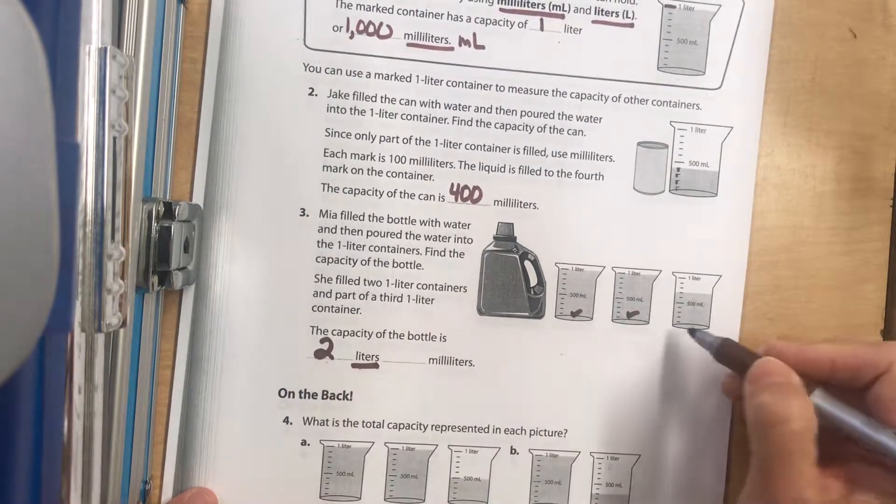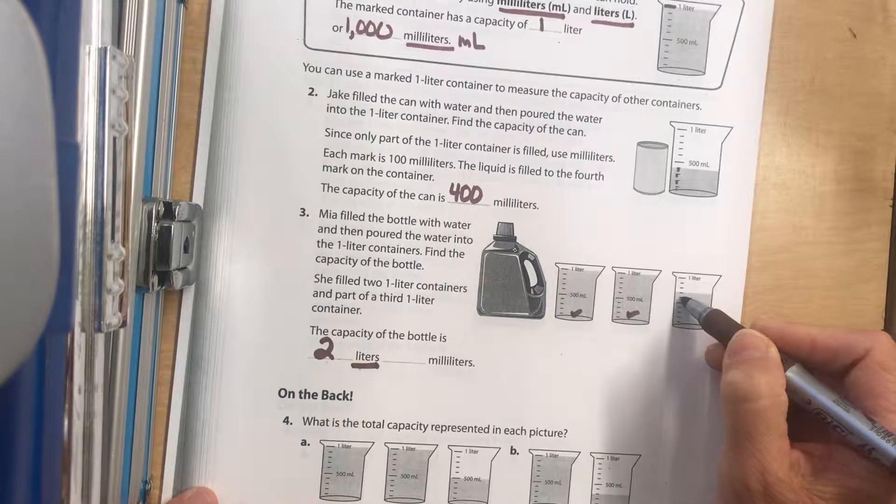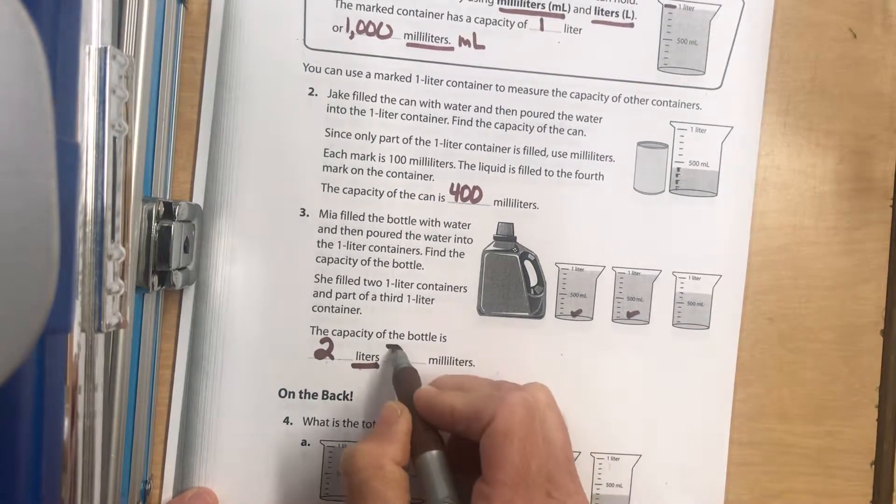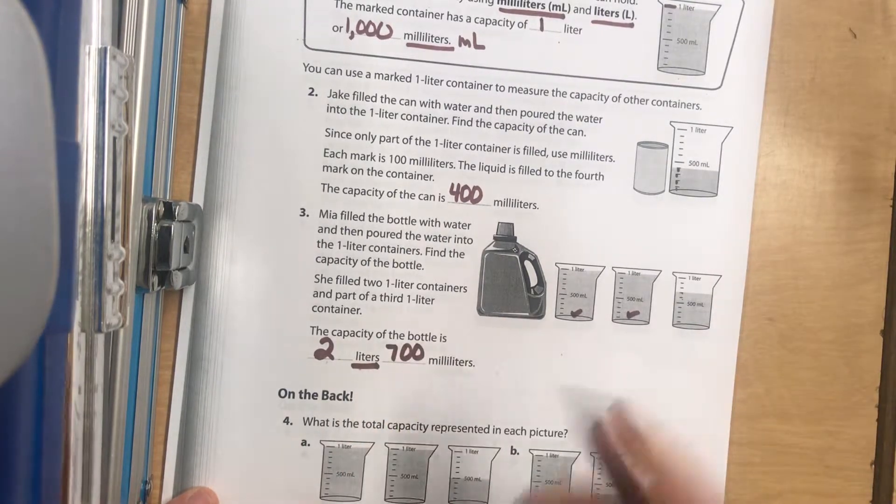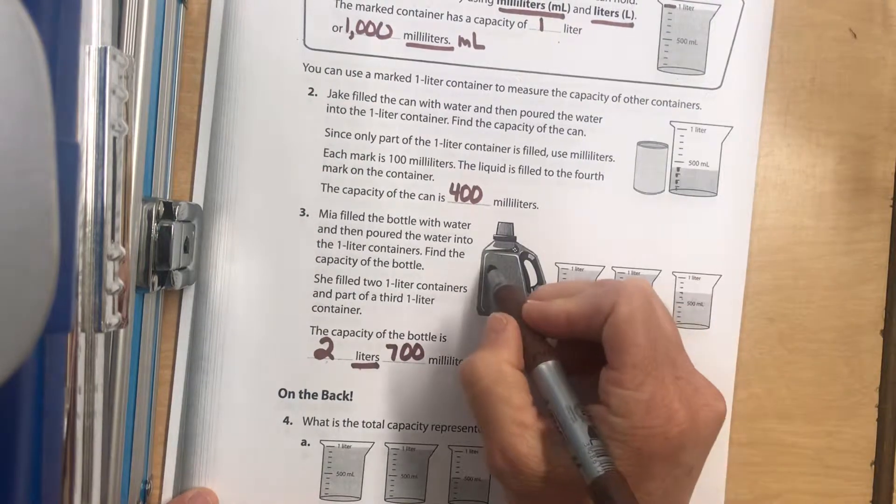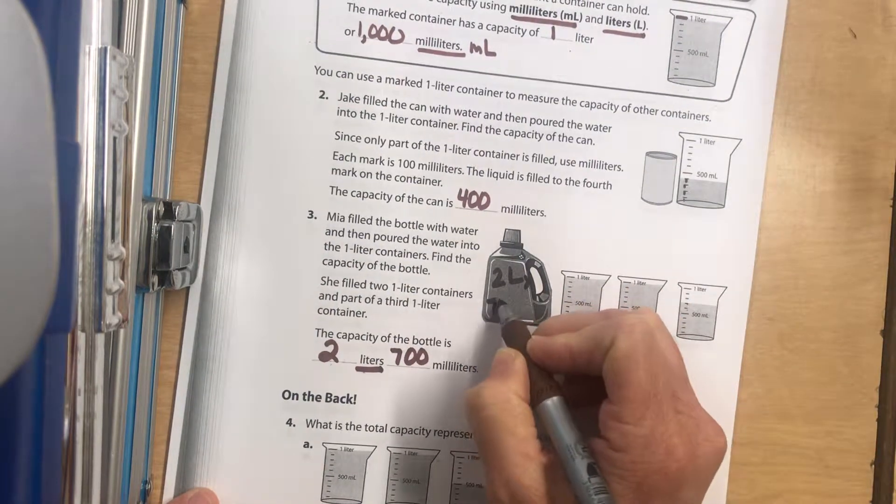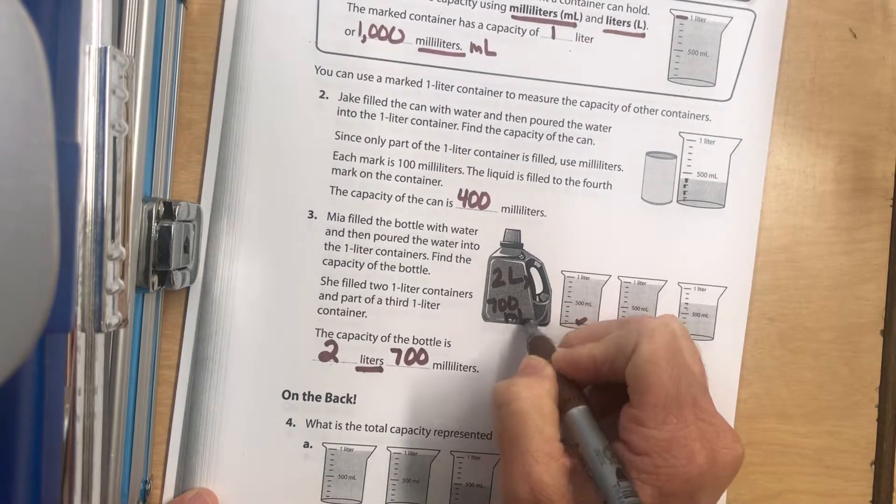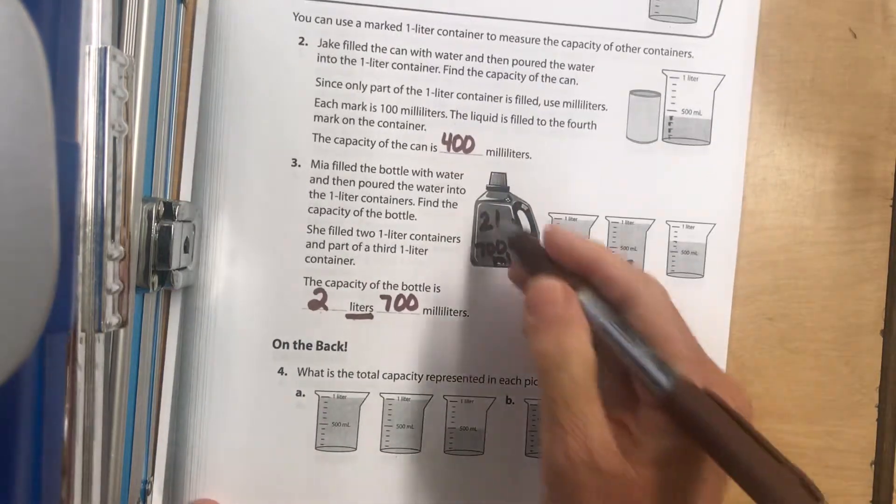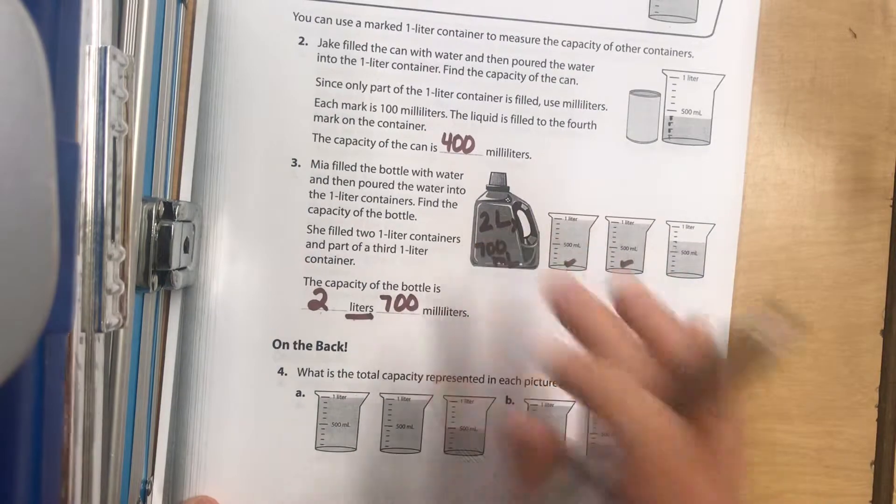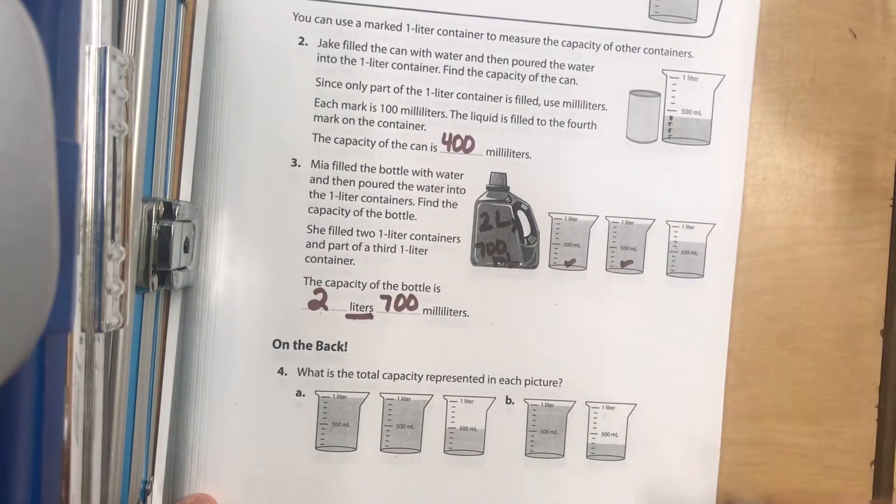This one's a liter and that one's a liter, so she has two liters. Plus this is 500, so that's 600, 700. The capacity of this big water jug is two liters and 700 milliliters. That's not quite three liters - it didn't fill up all the way to the top. It's less than three liters but definitely more than two liters.